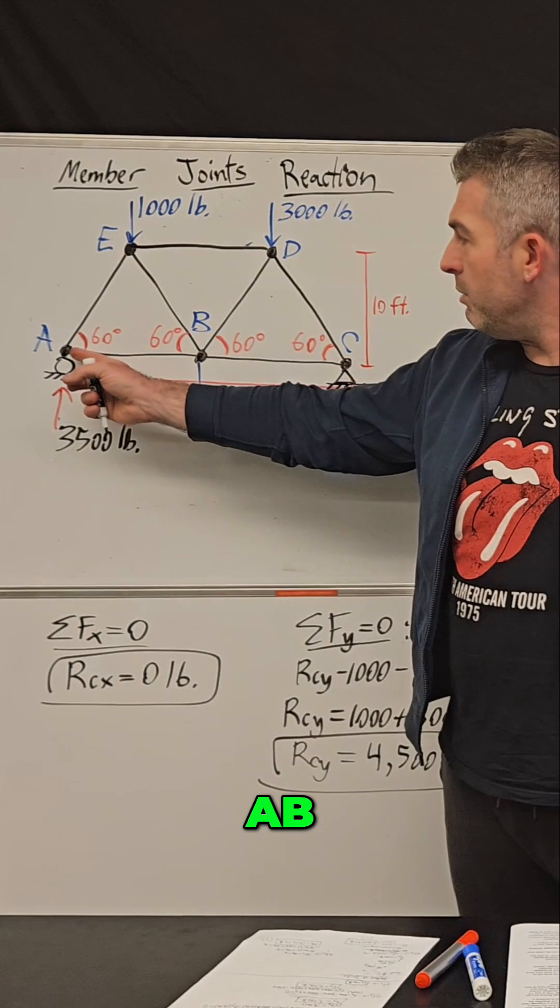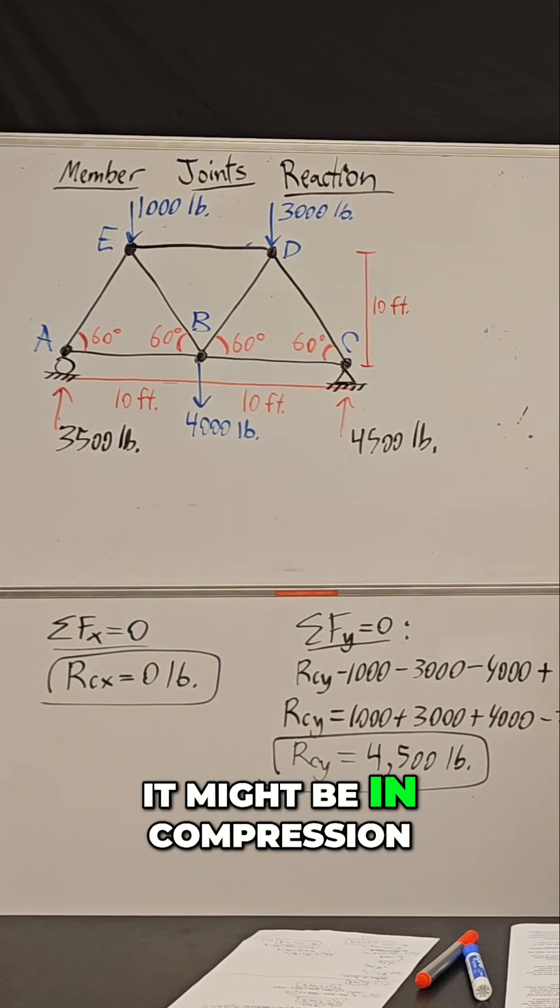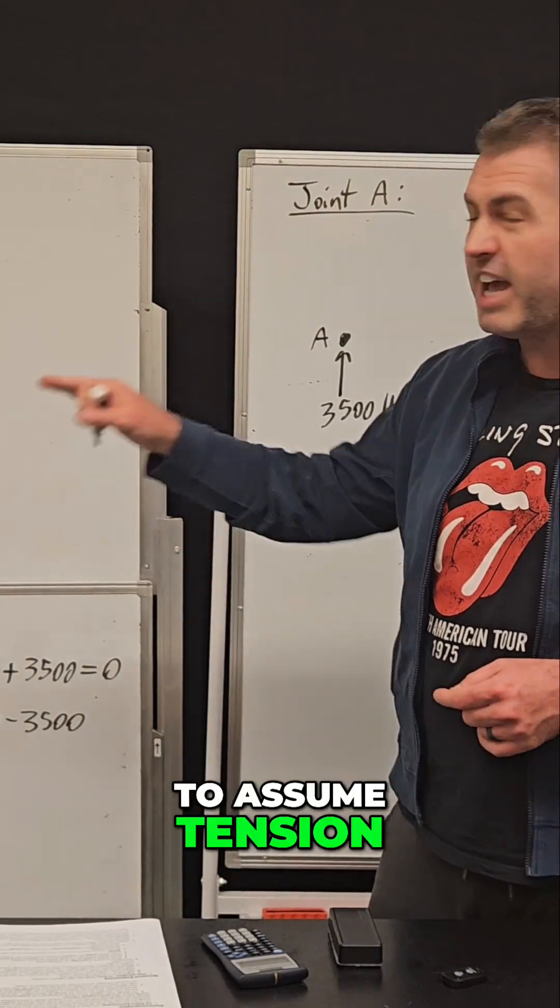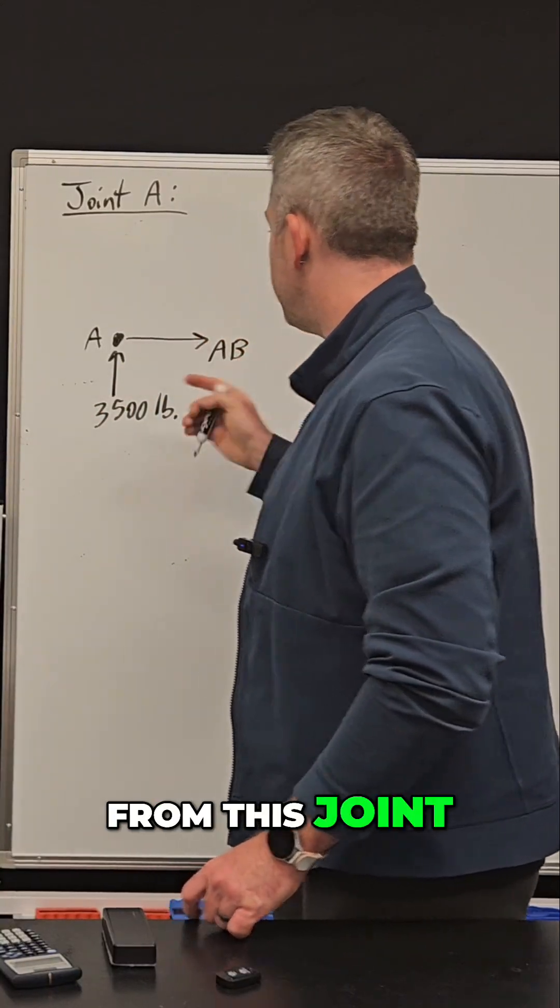I also know there's this member AB and that member might be in tension and it might be in compression. I actually don't know yet, so I'm always going to assume tension. I'm going to draw it pointing away from this joint.